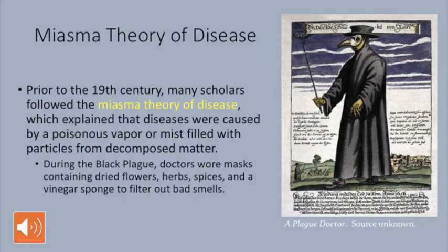In 19th-century England, miasma theory made a lot of sense to sanitary reformers. Rapid industrialization and urbanization meant the sudden growth of ghettos — poor, filthy, and foul-smelling neighborhood areas — and these tended to be the focal points of diseases and epidemics. By improving housing and sanitation and generally cleaning up these areas, levels of disease fell. The observation was that removing bad smells and bad air made people healthier. But of course, while this was a precursor to understanding germ theory, it was moving away from the idea of poisonous vapors and beginning to understand germs as microorganisms.